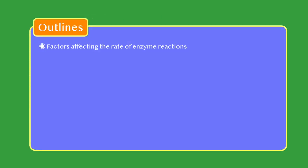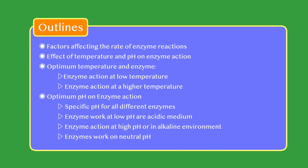These are the outlines. Factors affecting the rate of enzyme reactions. Today we have to discuss temperature and pH. Effect of temperature and pH on enzyme action. What is optimum temperature? Enzyme action at low temperature and at high temperature. Second part will be optimum pH and enzyme action. Specific pH for different enzymes. Enzyme work at low pH or acidic medium, at high pH or alkaline environment, and enzymes work on neutral pH.